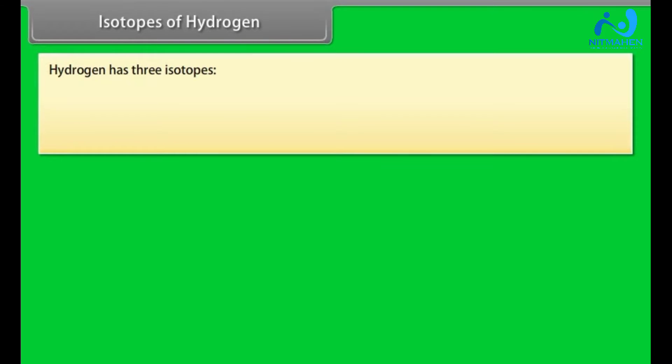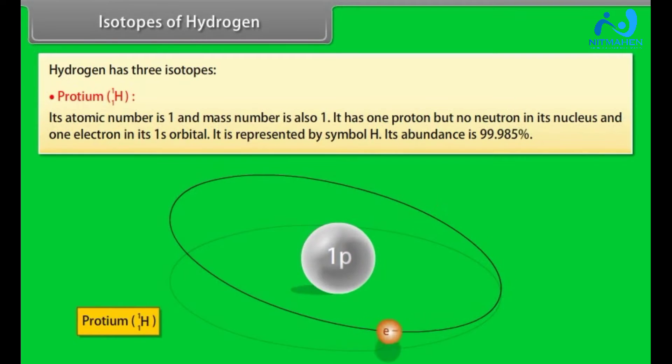Isotopes of hydrogen. Hydrogen has three isotopes. Protium: Its atomic number is 1 and mass number is also 1. It has one proton but no neutron in its nucleus and one electron in its 1s orbital. It is represented by symbol H. Its abundance is 99.985%.